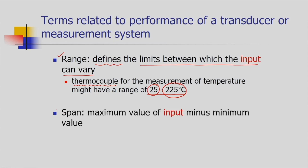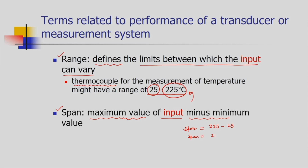The next term is span. Span is nothing but the difference between the maximum value and the minimum value of the input. Taking the same thermocouple example, the span is 225 minus 25, so the span is 200 degree Celsius.